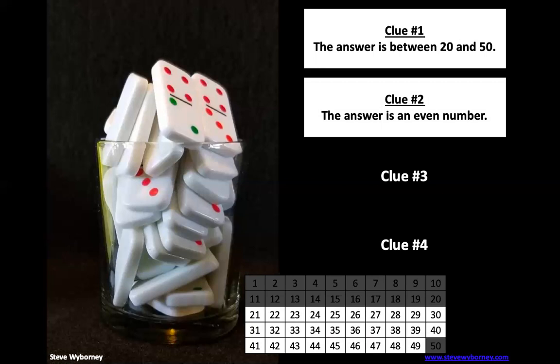Since it's an even number, we want to cross out the odd numbers. The odd numbers end with a one, three, five, seven, or nine. Let's go ahead and cross out the odd numbers.